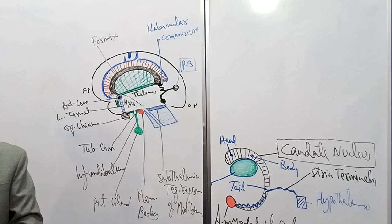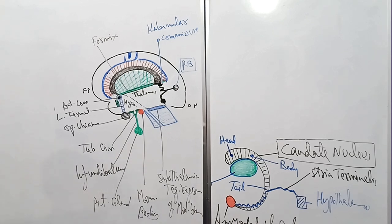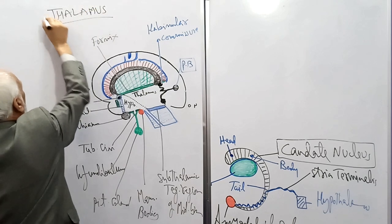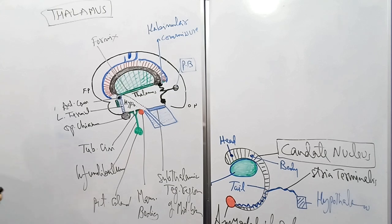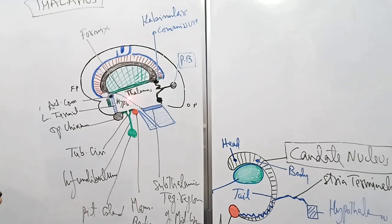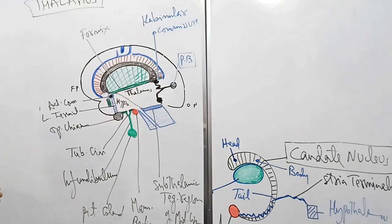We finished with the epithalamus. Next is the thalamus. The lateral wall of the third ventricle is crossed by an oblique sulcus — the hypothalamic sulcus. Above and behind this hypothalamic sulcus is the thalamus, forming the upper and posterior part of the lateral wall of the third ventricle.